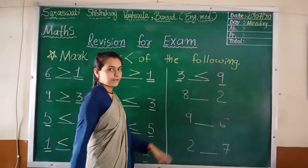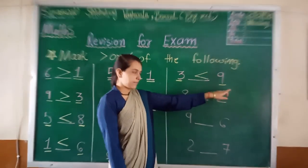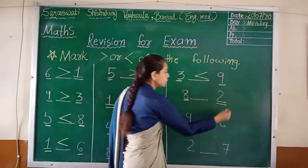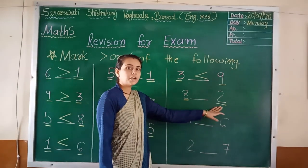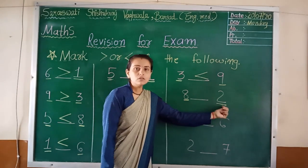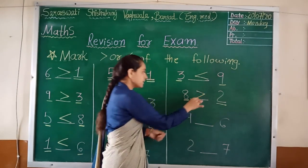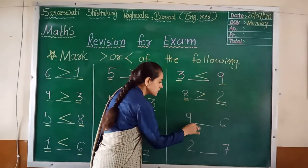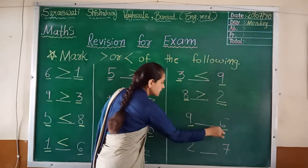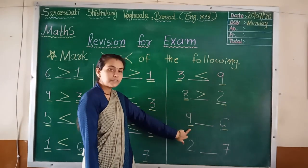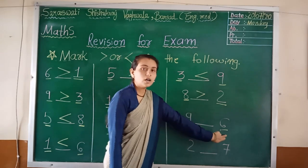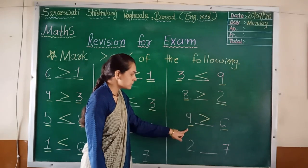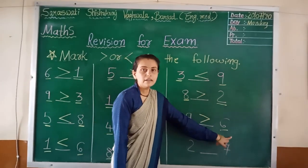Eight is greater than seven. Nine and six. Now compare them. Which is the bigger number? Nine or six? Nine, right? So, greater than. Nine is greater than six.